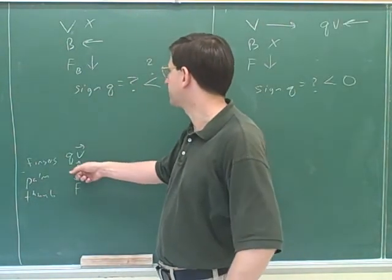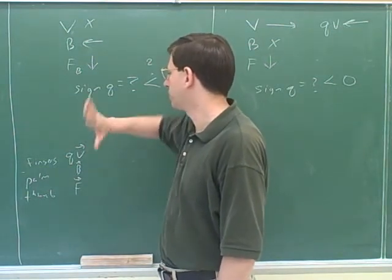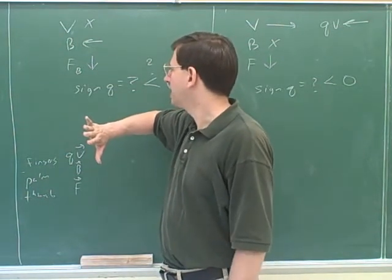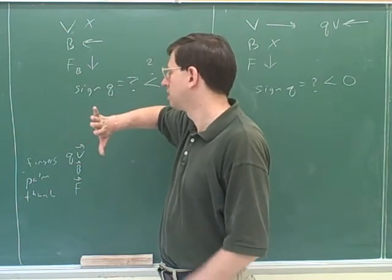So, magnetic field for our palm is pointing to the left. And then our thumb for the force is pointing down. So, then what direction is qv in? To, like, out of the board.